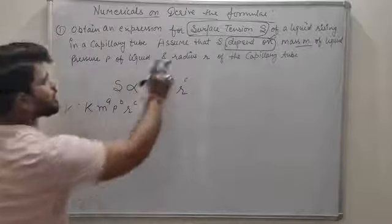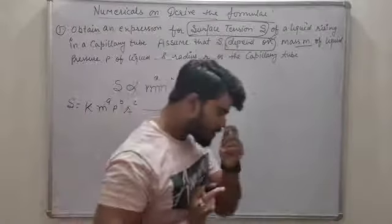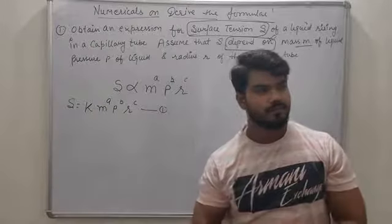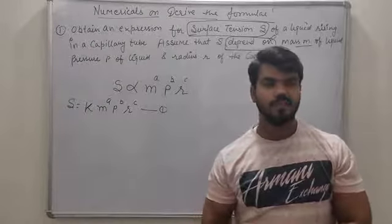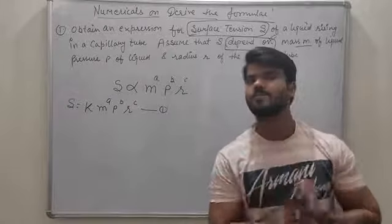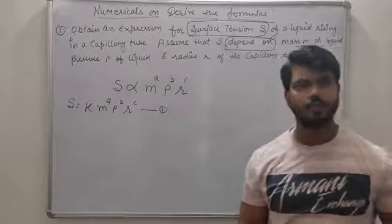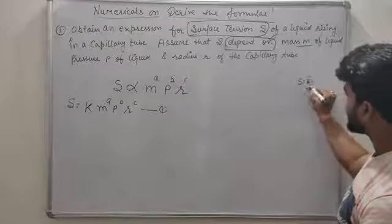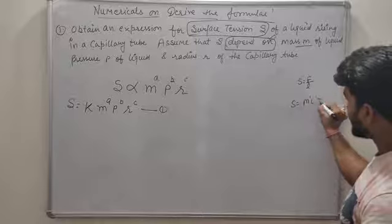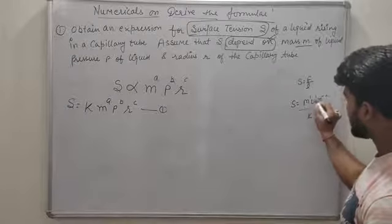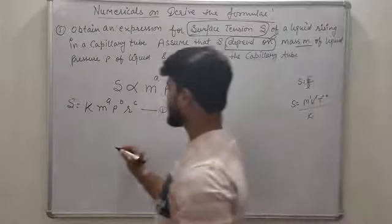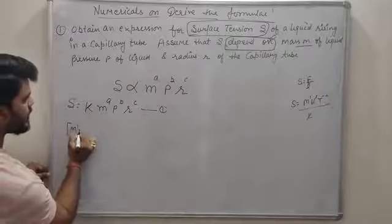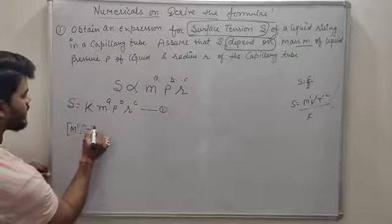S for surface tension — अब आपको मालूम होना चाहिए कि surface tension का dimensional formula क्या होता है। Surface tension का basic formula है force upon length। Rough notebook में जाके निकालो: M1 L1 T-2 upon L — cancel out करने पर M1 L0 T-2 बचेगा।